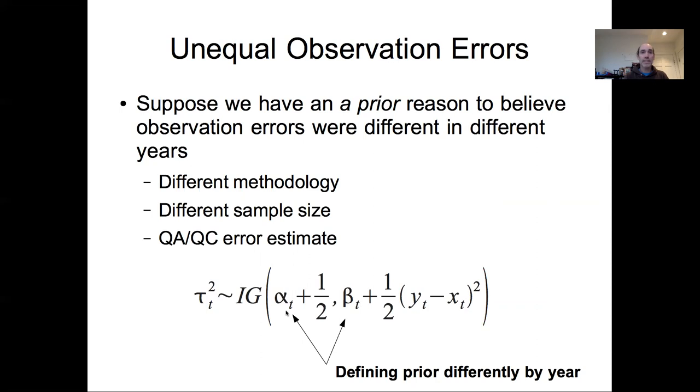The priors could come from feeding these in individually or potentially dealing with different groups of data. Maybe the methodology changed over different times so certain years would have shared parameters. You could also imagine doing something like this in a hierarchical framework where there's shared variability across years.